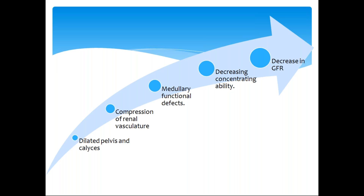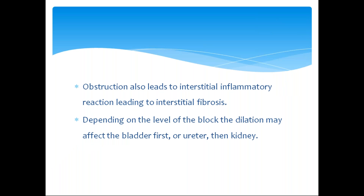Finally this leads to decreased GFR. The kidneys filter blood through a concentration gradient maintained by the blood vessels. When there is obstruction in flow, dilated calyces compress the blood vessels, causing failure in the vascular gradient. So filtering and concentrating ability is reduced, leading to decreased GFR. The obstruction also leads to interstitial inflammatory reaction, leading to interstitial fibrosis. Depending upon the level of obstruction, the dilation may affect the bladder first, or ureter, or directly the kidneys.